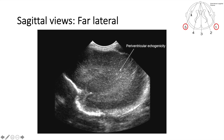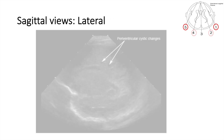This is more lateral to the previous view — we're cutting through the white matter. It's a very important view because sometimes we can see periventricular echogenicity, which may mean something in preterm infants, may mean nothing, or it could be the start of PVL (periventricular leukomalacia).